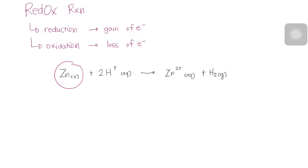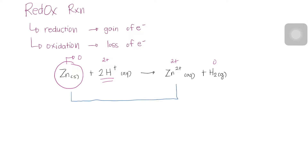So here, we can see that zinc has an oxidation state of zero. Hydrogen carries a positive 1 charge, making it a total of 2 since there are 2 hydrogen ions present in the balanced equation. On the product side, we have 2+ for zinc and 0 for hydrogen gas. The oxidation numbers in this reaction show us that the oxidation number of zinc changes from 0 to positive 2, while that of hydrogen changes from positive 1 to 0.